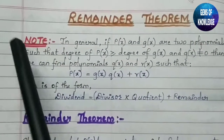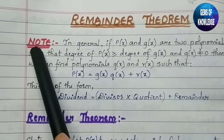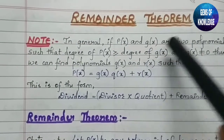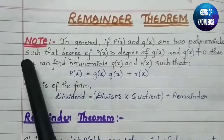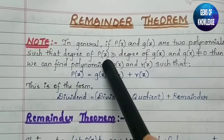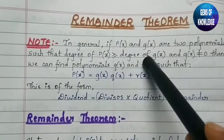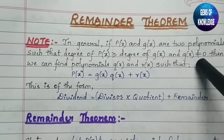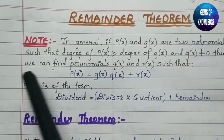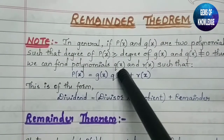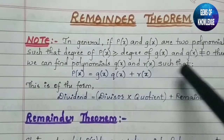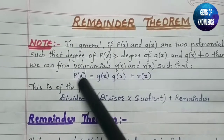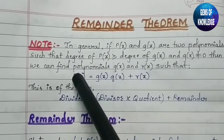Before starting the Remainder Theorem, there is a note given here. In general, if p(x) and g(x) are two polynomials such that the degree of p(x) is greater than or equal to the degree of g(x), and g(x) is not equal to zero, then we can find polynomials q(x) and r(x) such that the formula shown here holds.